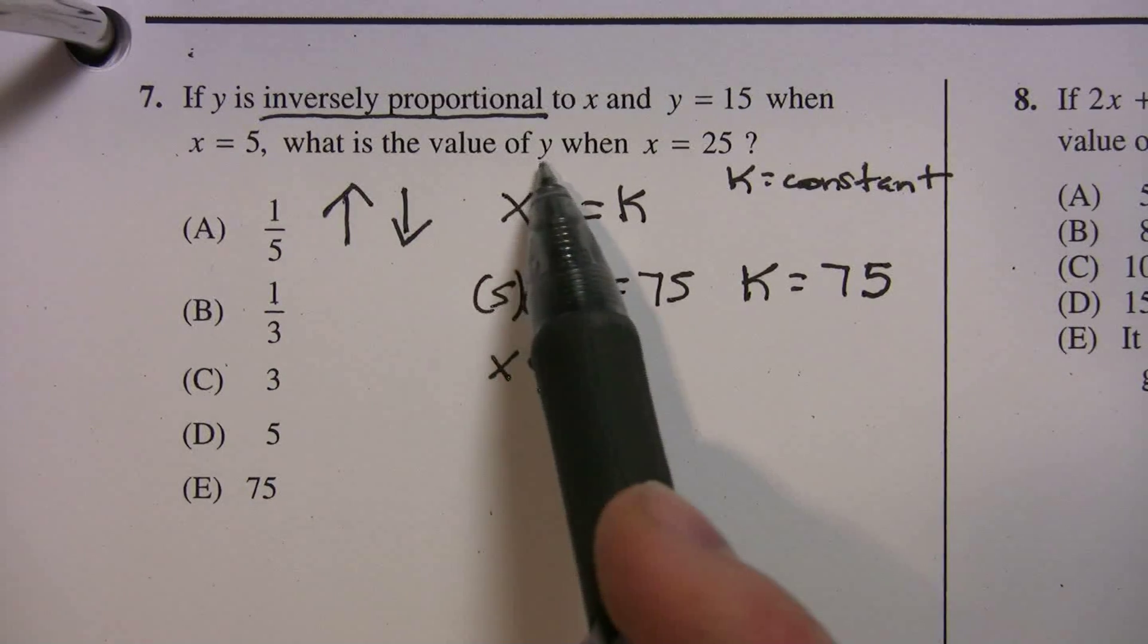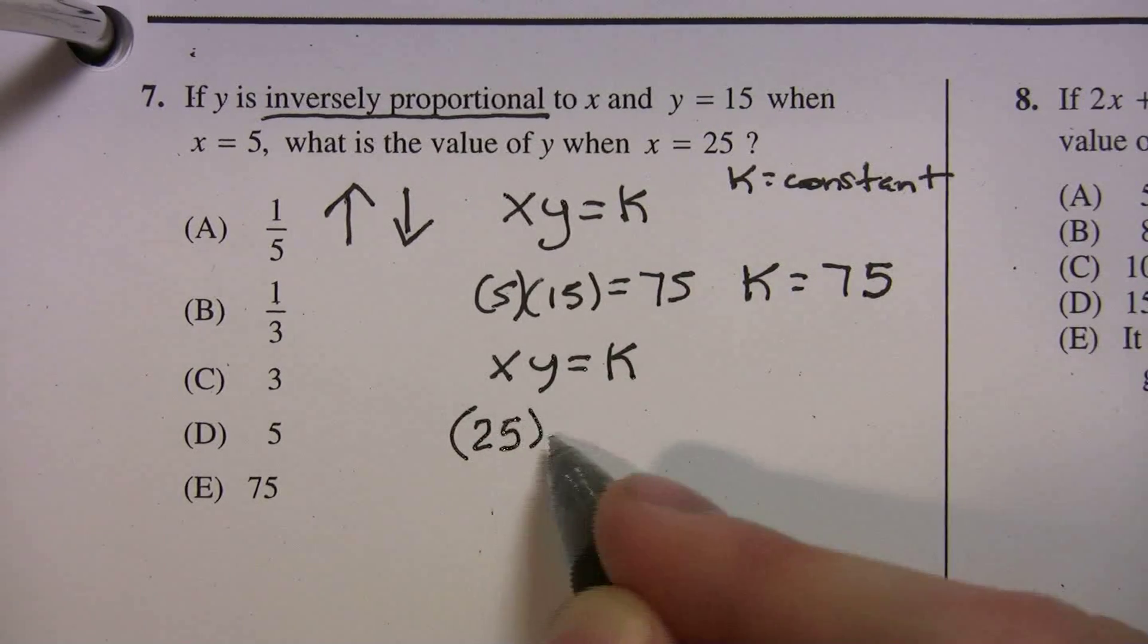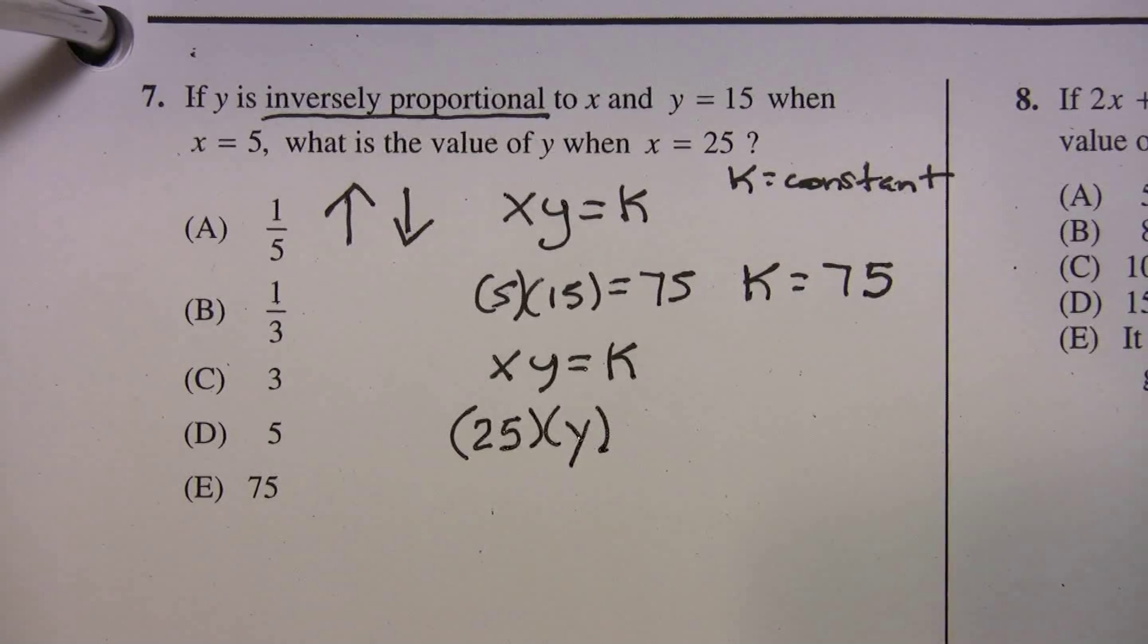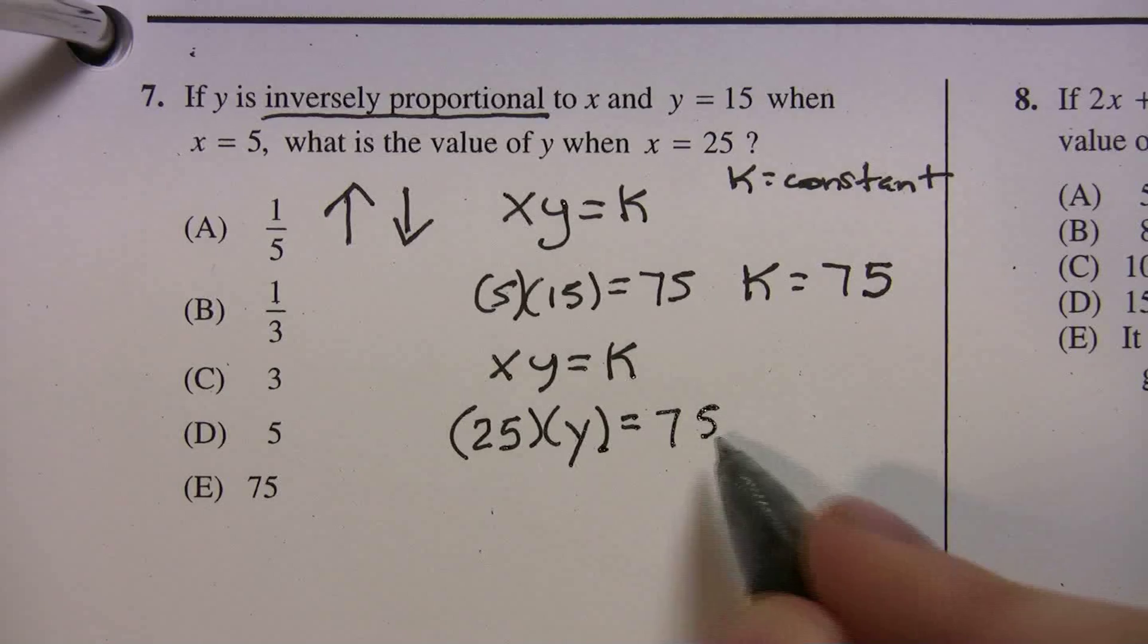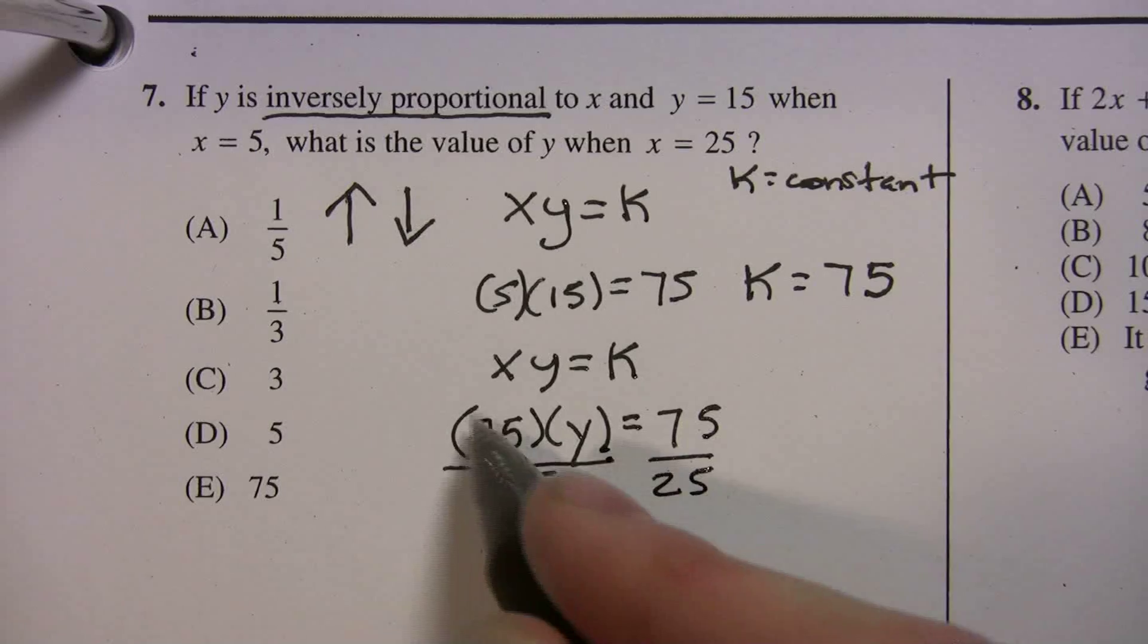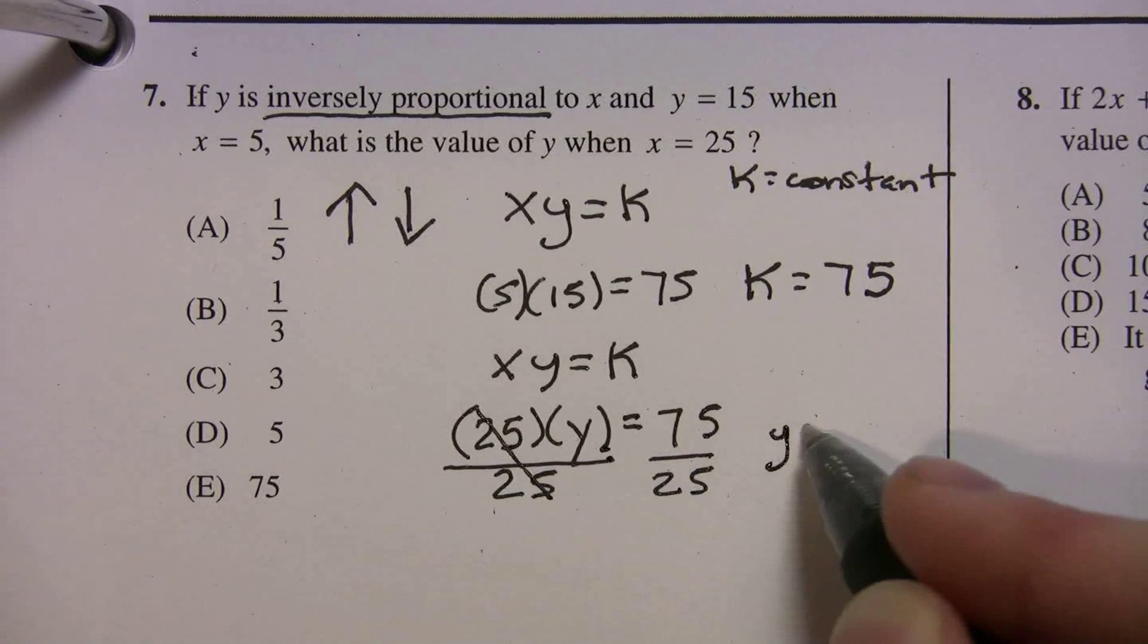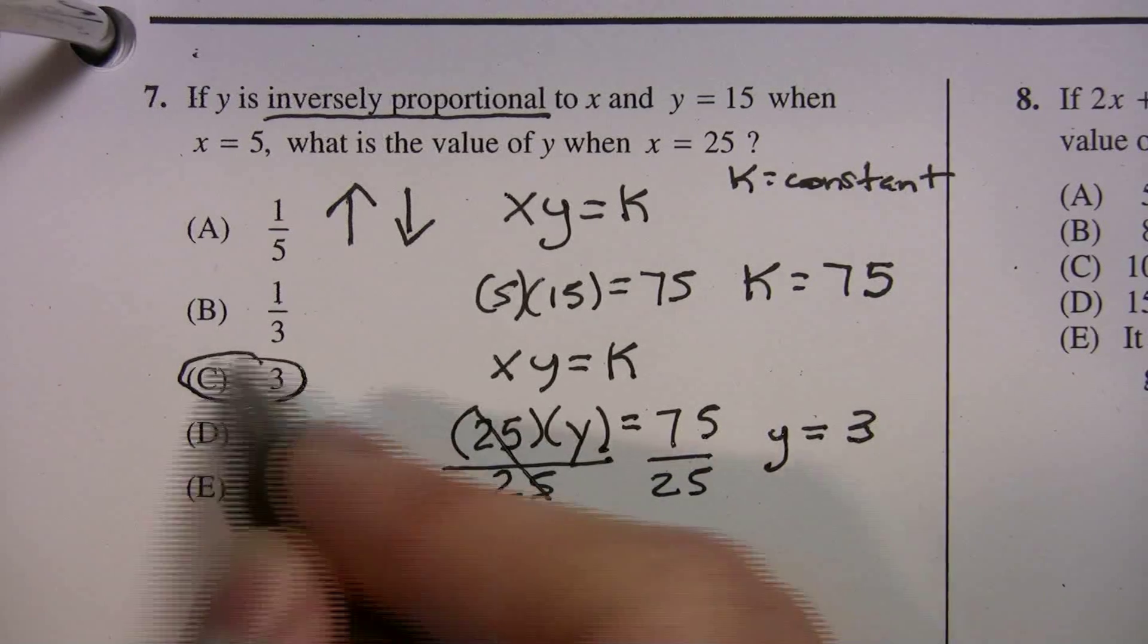What is the value of y when x is 25? Well, x is 25. We're trying to figure out what y is. And now we know from before that our k is 75. Divide both sides. And you should get y is equal to 3. Choice C.